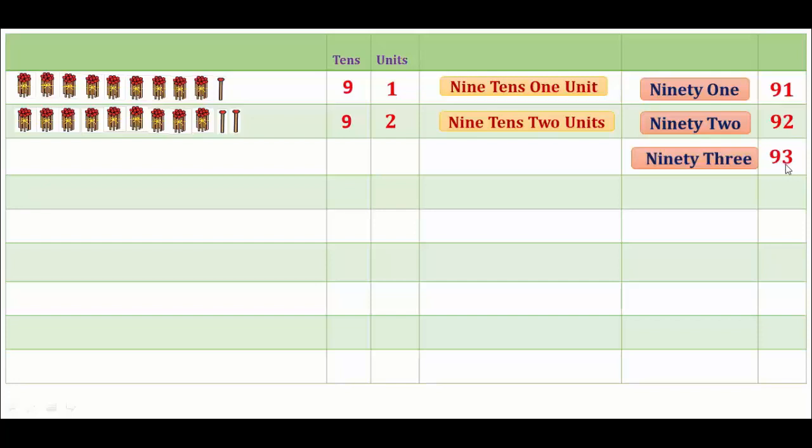93. Here also, 1, 2, 3, 4, 5, 6, 7, 8, 9 tens and 1, 2, 3 units. 9 tens and 3 units make 93.